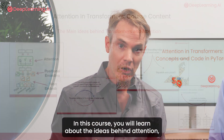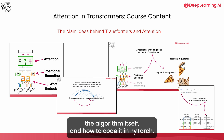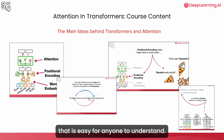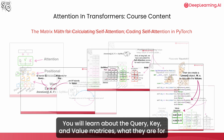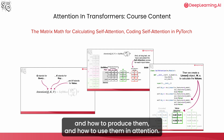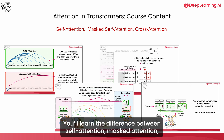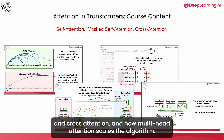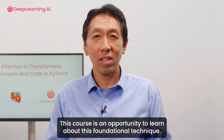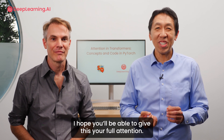In this course, you will learn about the ideas behind attention, the algorithm itself, and how to code it in PyTorch. Each concept will be explained in a step-by-step fashion that is easy for anyone to understand. You will learn about the query, key, and value matrices — what they are for, how to produce them, and how to use them in attention. You'll also learn the difference between self-attention, masked attention, and cross-attention, and how multi-head attention scales the algorithm. This course is an opportunity to learn about this foundational technique. I hope you will give this your full attention.